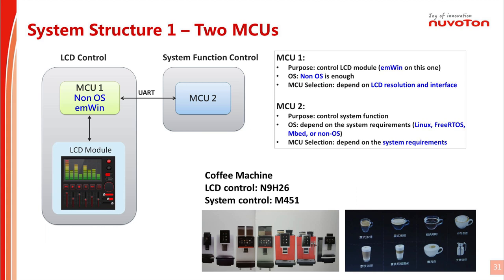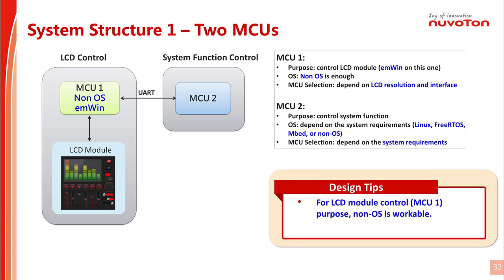System structure 1 contains two microcontrollers. MCU1 is used for LCD control only, so there is no need for an operating system on MCU1. The reference block diagrams of MCU1 are shown in pages 14, 17, and 20. The selection of MCU1 depends on the LCD resolution and interface. MCU2 is used for system function control. The selection of MCU2 and operating system depends on the system requirement. For LCD module control purpose on MCU1, bare metal (no OS) is workable.